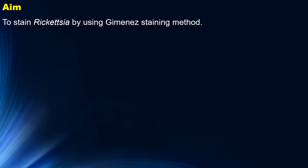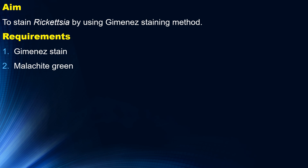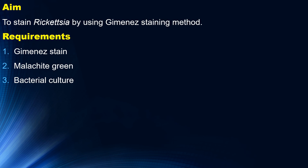Let's see the aim of the experiment. The aim of this experiment is to stain Rickettsia by using the Gimenez staining method. Now let's see the requirements. We require Gimenez stain, malachite green, and bacterial culture. These are the three important requirements.